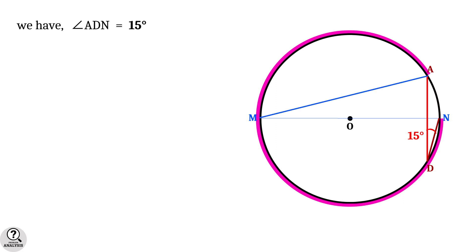Now draw the line AM. Note that angle AMN is also an angle on this arc. Hence, by property 1, angle AMN is equal to angle ADN, which is equal to 15 degrees.